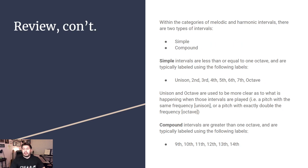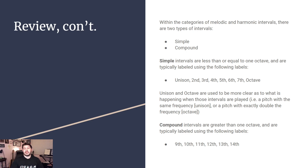Within the categories, remember we have simple and compound intervals. A simple interval is an interval that is less than or equal to one octave. Now this was something that we actually had a little bit of confusion on with our checkout form — a lot of us were saying that a simple interval was greater than an octave, which it is not. A simple interval is less than or equal to one octave.